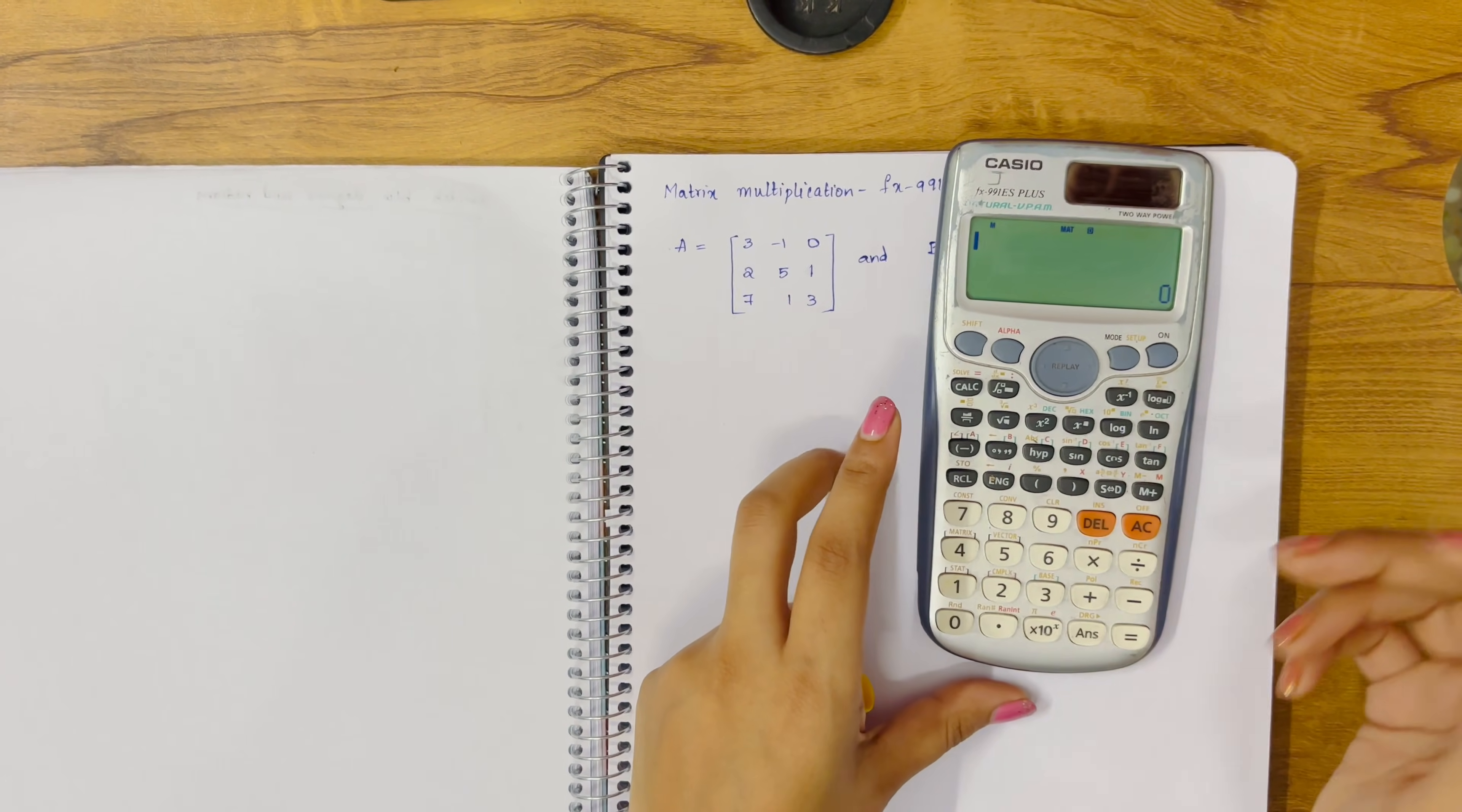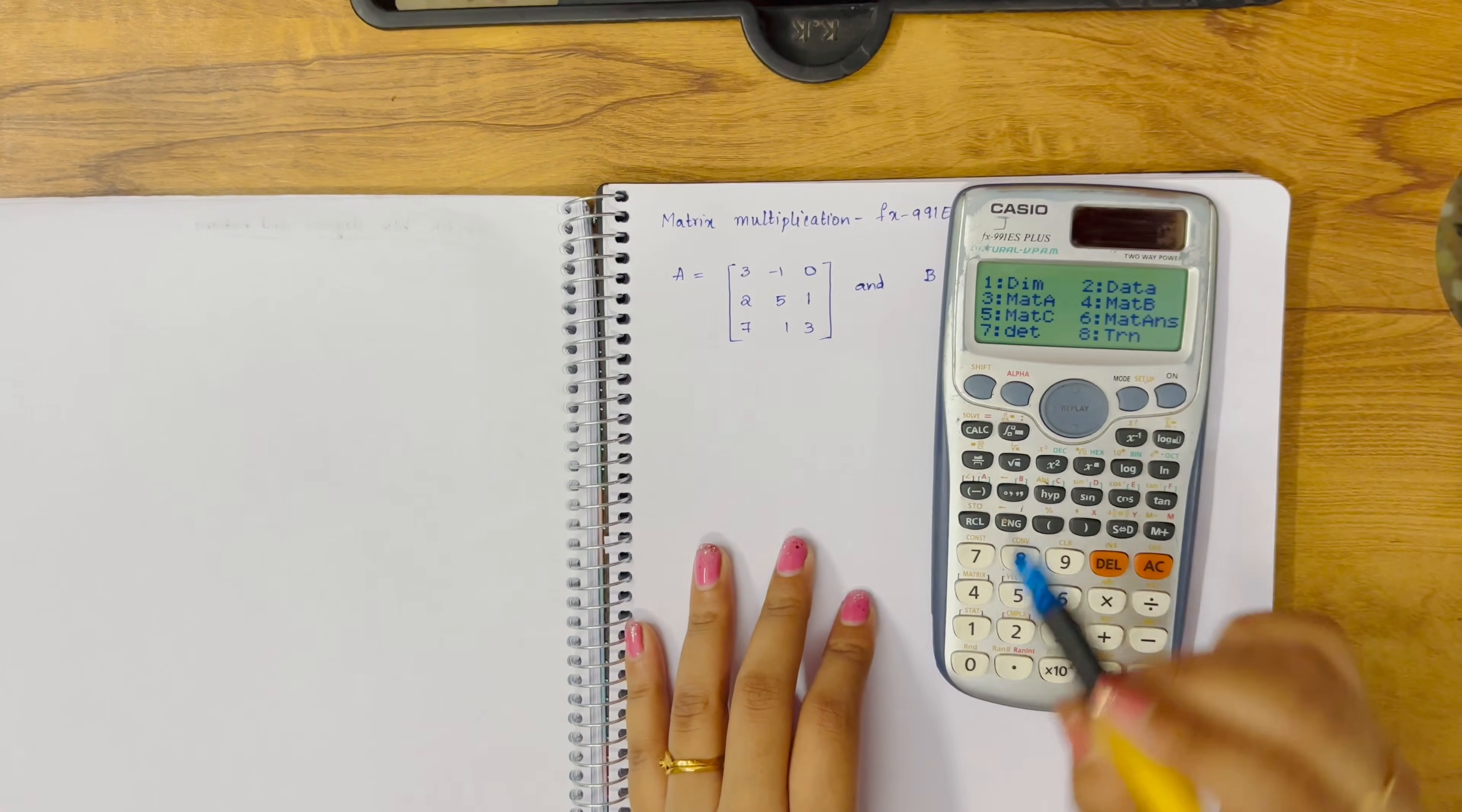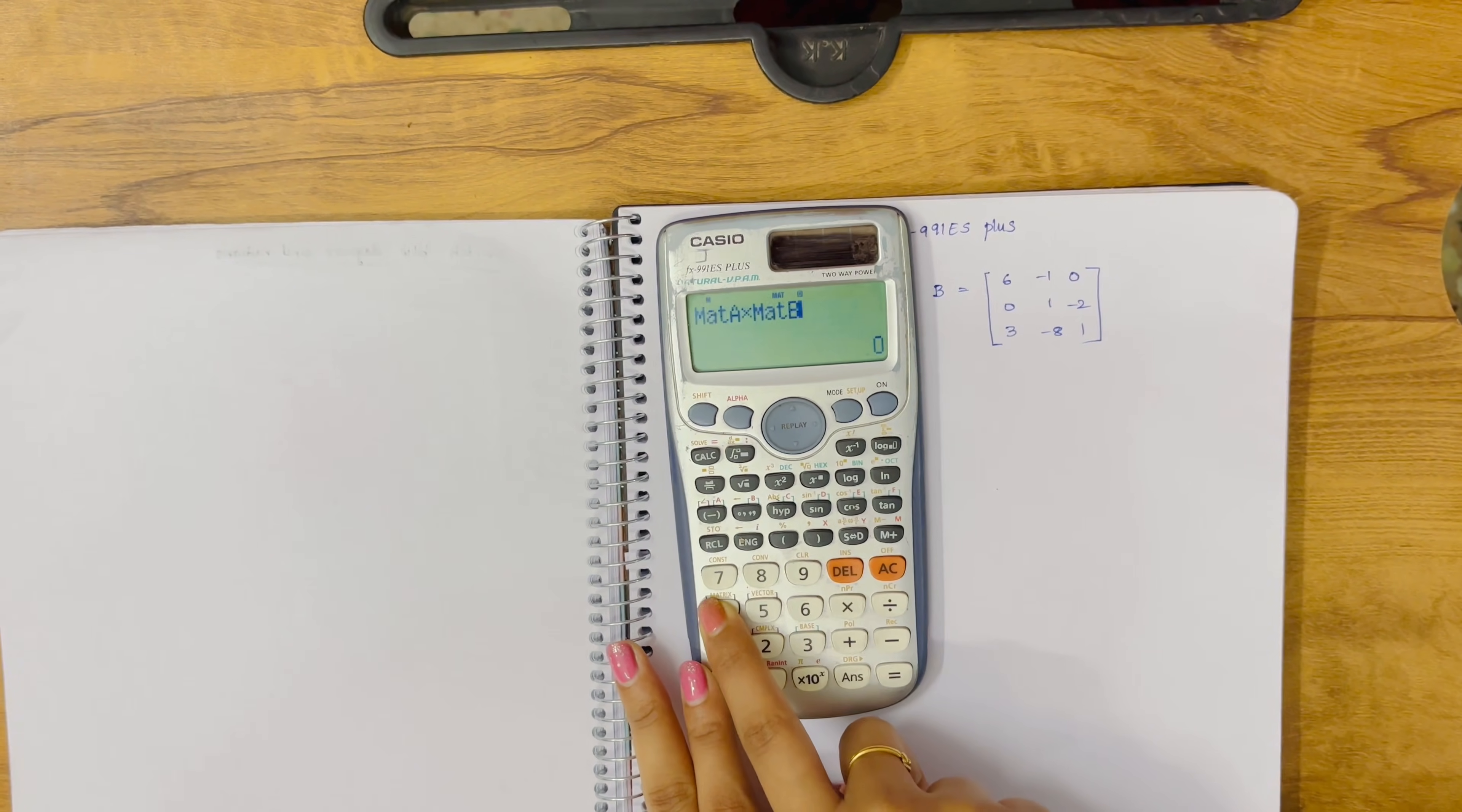Shift 4, shift 4, shift 4. We've gotten all the options. We are doing matrix multiplication, so Mat A into Mat B. Click on option 3, Mat A, then the multiply symbol, then shift matrix 4. We want Mat B, so click on 4.